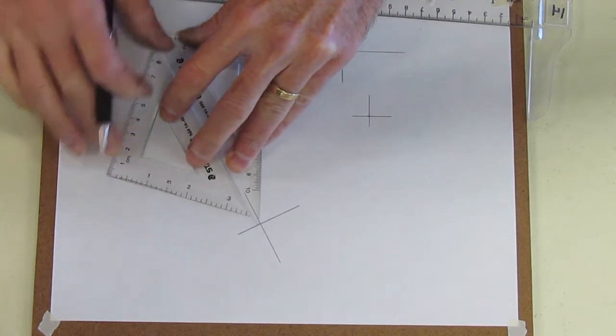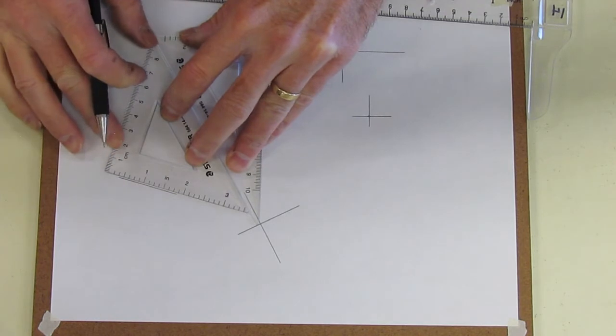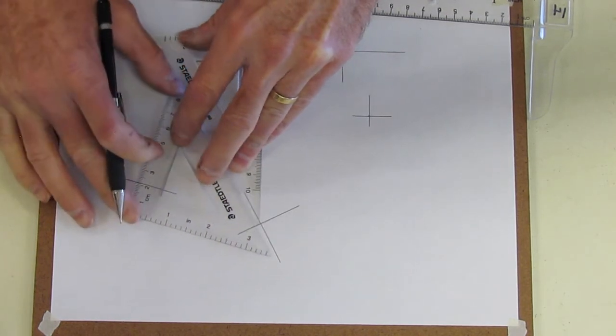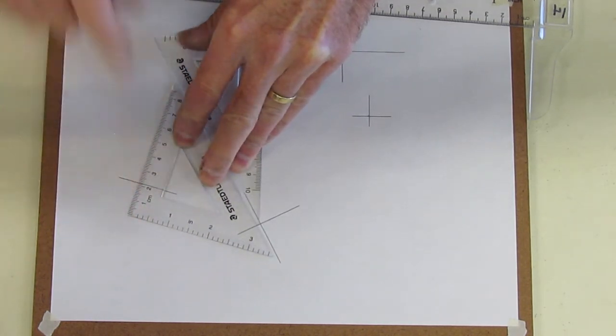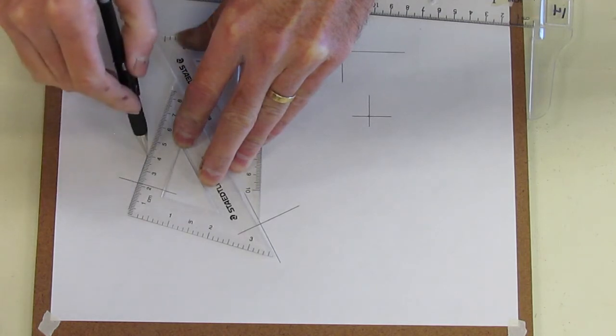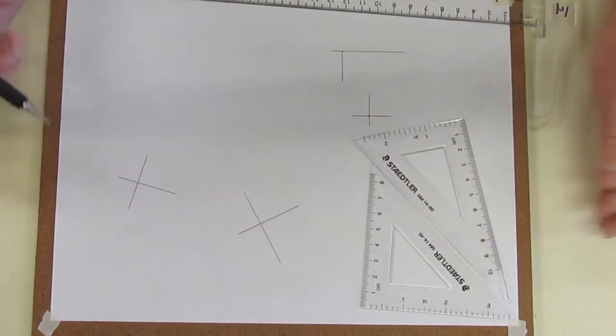Once I've done that, I slide my triangle up and make sure you're perfect. Slide my triangle up, making sure that one of my triangles, the triangle that's not lined up, is stationary. And I draw a line. And as you can see, I'm still 90 degrees.